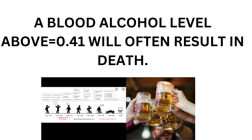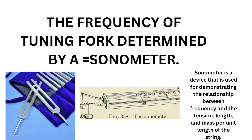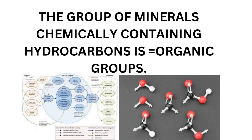Chromosomes first become visible during which phase of mitosis? They are visible during prophase. There are four further phases: prophase, metaphase, anaphase, and telophase, but chromosomes are only visible during prophase. The frequency of a tuning fork is determined by a sonometer. The group of minerals chemically containing carbon is organic groups — organic groups are those in which the base element is carbon, most of the time carbon, hydrogen, and oxygen.